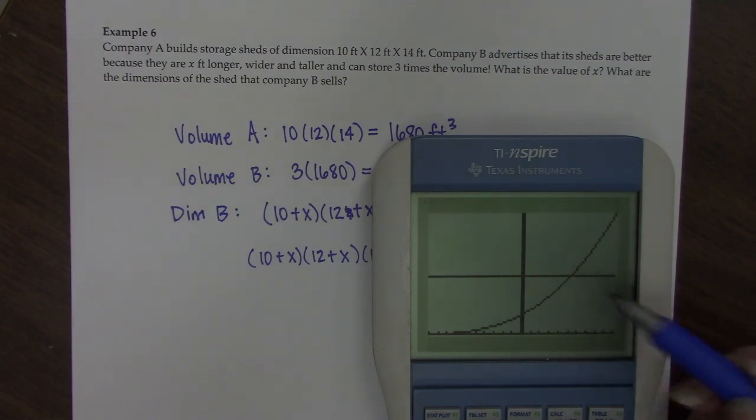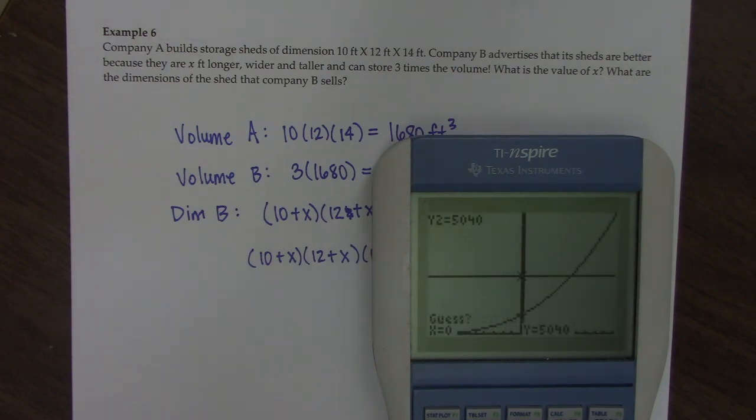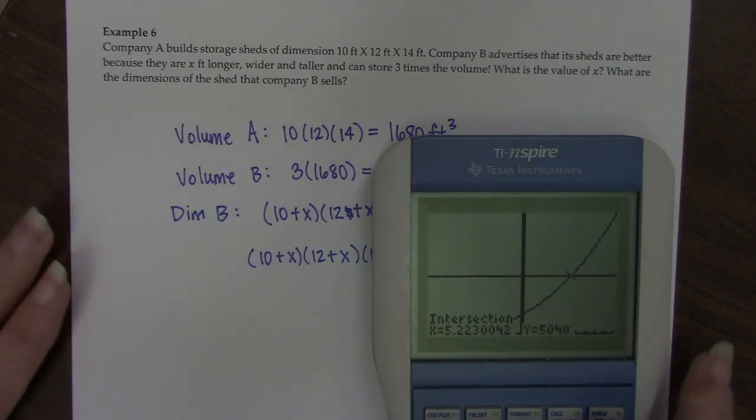Here's where they intersect. If we go to second calc intersection, it grabs the first curve, the second curve, takes a guess, and X is 5.22 feet.